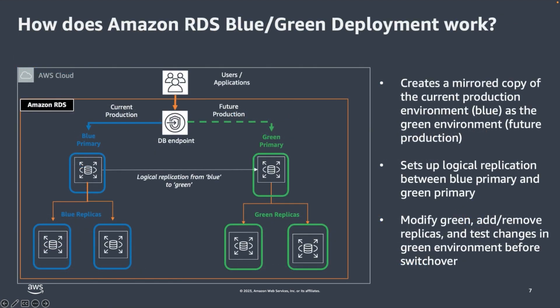So how does blue-green deployment work? In the Amazon RDS console, by using a few clicks, RDS will automatically create a green environment that mirrors your blue environment, including any in-region read replicas. This feature will keep your green primary database up to date with your blue primary using logical binlog replication. Once the green environment is provisioned and available, you can begin to make changes and test your changes. You can also add or remove replicas in your blue and green environments.